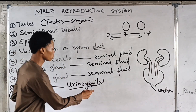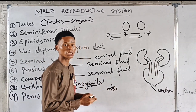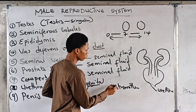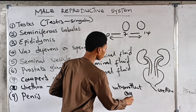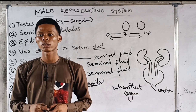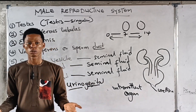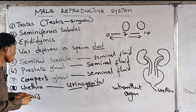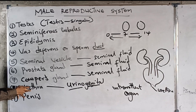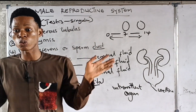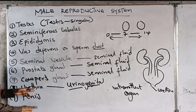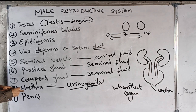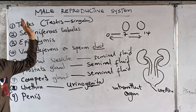The penis serves as a copulating device, bringing the male and female together. The sperm is released through the urethra, which extends through the penis. Urine also passes through the urethra within the penis. So the urinogenital organ is the urethra, while the penis is the copulating device. These are the nine functional parts of the male reproductive system. Next, we will take the female reproductive system.